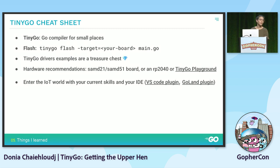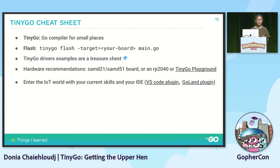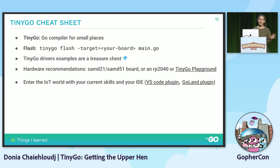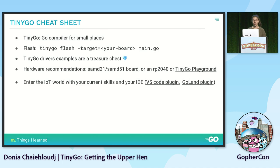It's Hacktoberfest, so it's a good period to contribute to open source. I don't have strong hardware recommendations, but the boards I mentioned are really well supported by TinyGo. If you don't want to invest or don't have hardware, there is a TinyGo playground like the Go playground but with simulated boards - you can put cables on LEDs and play with the code. As Gophers, you have all the skills to enter the IoT world. You can use a plugin for VSCode or GoLand.